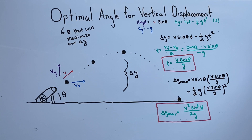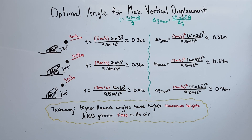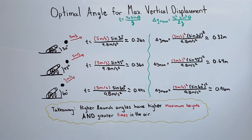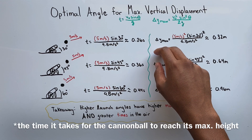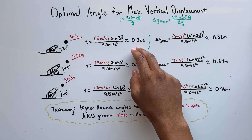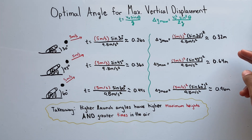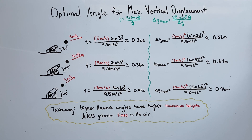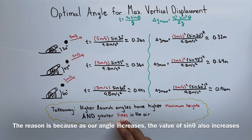Now let's look at an example. We have three cannons launched with the same velocity but at three different angles. I went ahead and calculated the time and the maximum height the cannonball reaches. A pattern to notice is that as the angle increases, both the time in the air and the maximum height also increase. The key takeaway is that objects launched at a higher angle have a higher maximum height and greater time in the air.